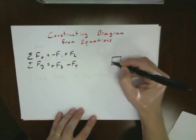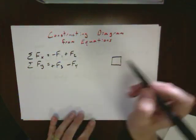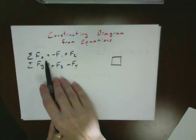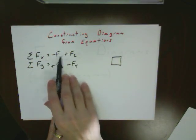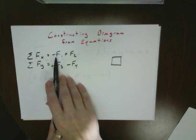I start with a box for my object just so I can keep track of what's going on. Start with one of the two equations, maybe your fx equation. Recognize that what this means is these forces are either left or right with right being the positive direction and left being the negative direction.